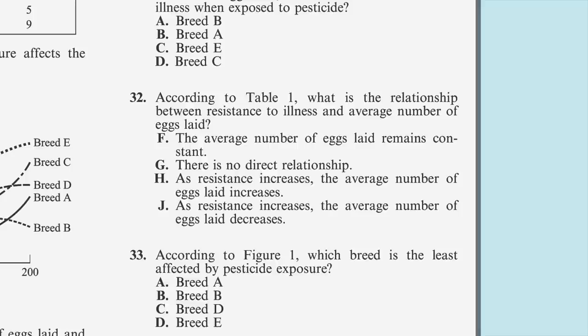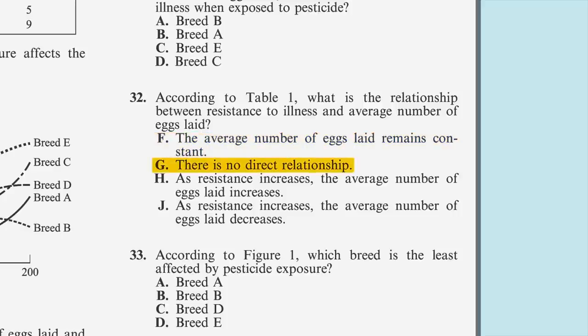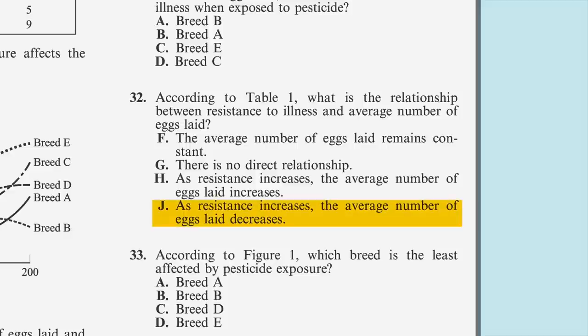Our answer choices are: F, the average number of eggs laid remains constant; G, there is no direct relationship; H, as resistance increases, the average number of eggs laid increases; or J, as resistance increases, the average number of eggs laid decreases.